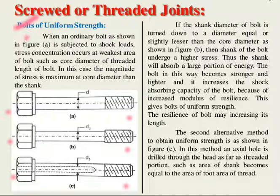In the next case, if the shank diameter of the bolt is turned down to a diameter equal to or slightly less than the core diameter, as shown in figure B.